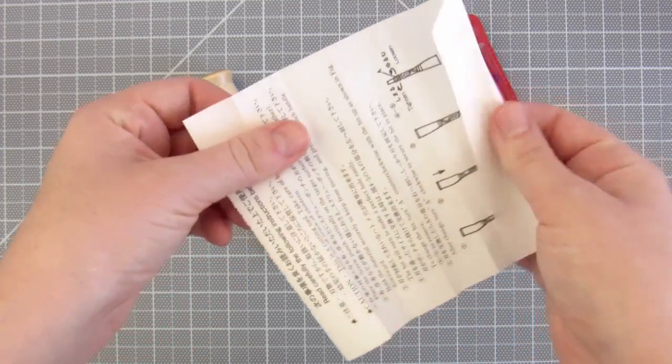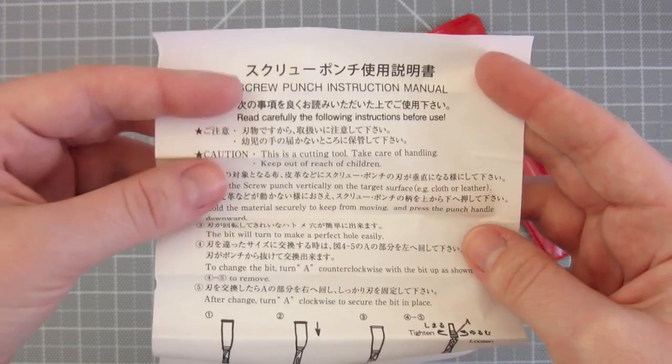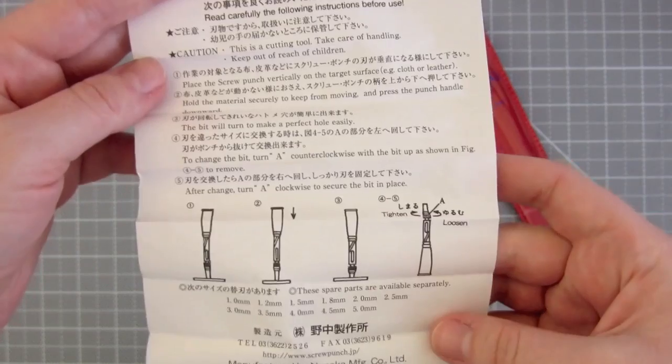Now this could be totally up to personal preference, but I read that the screw punches that are made in Japan are the real deal, like they're better made than others, more sturdy, durable, and last longer.